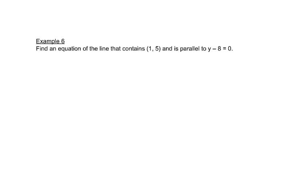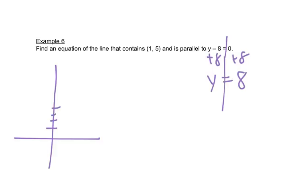So here, we have paralleled now to y minus 8 equals 0. Let's do a little bit of cleaning this up. Let's move that 8 to the other side. So we have y equals 8. Remember, that's a line that crosses the y-axis at 8. It's horizontal.